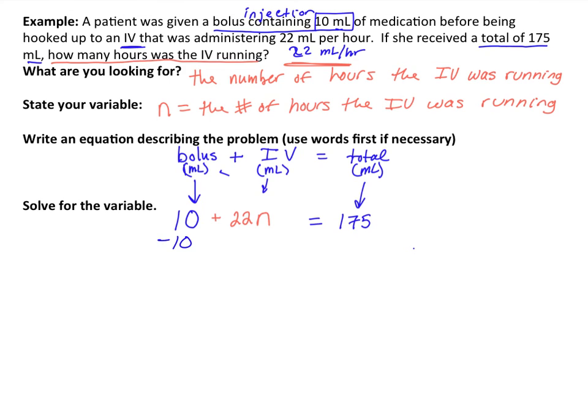I'm going to subtract 10 from both sides. This is using the properties of equality. 22N is going to be equal to 165. And now when I divide by 22, let's see what we get.